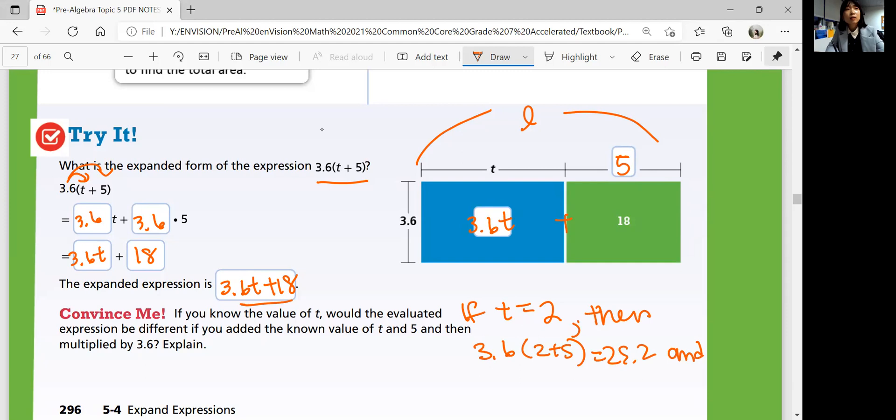And the second equation, second expression, 3.6 times 2 plus 18 should also be 25.2. So no, because they're equivalent expressions.